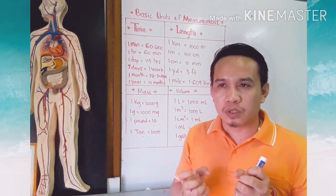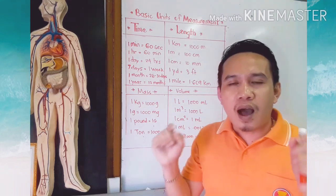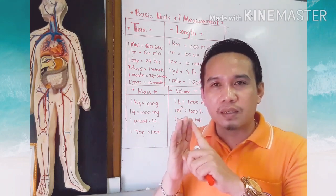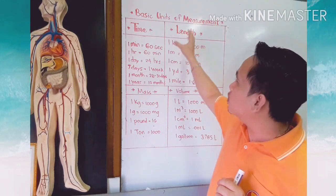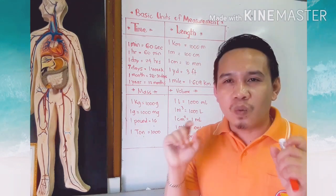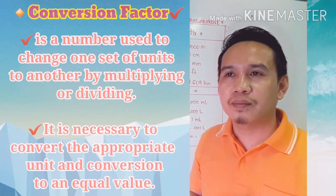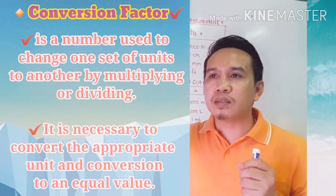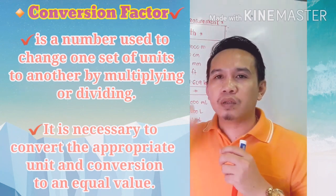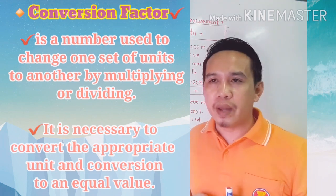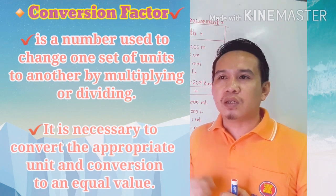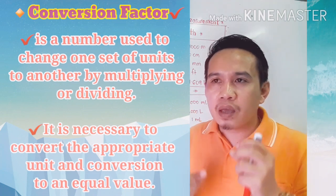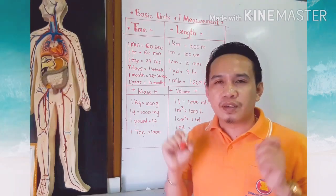What is the purpose of conversion of units? How are we going to convert the units of length, time, volume, and mass? Here is the list of basic units of measurement. A conversion factor is a number used to change one set of units to another by multiplying or dividing. Learning a conversion factor is very important because it applies the appropriate conversion to an equal value.